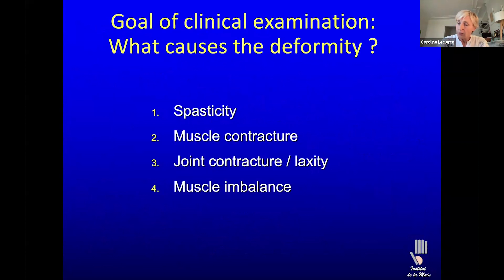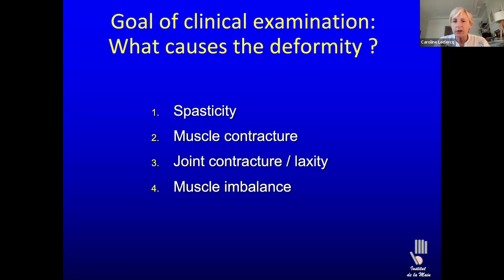First we look at the patient — what is the deformity? It's very often adduction and internal rotation of the shoulder, but not always; sometimes it can be external rotation and abduction. The elbow is often in flexion. The wrist is often in flexion and pronation. In children, there is often also ulnar deviation of the wrist, which is not as frequent in stroke patients.